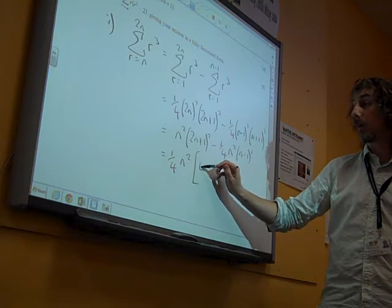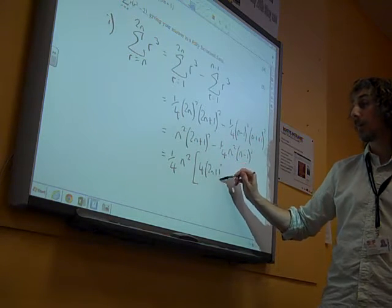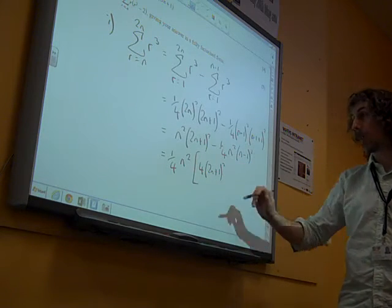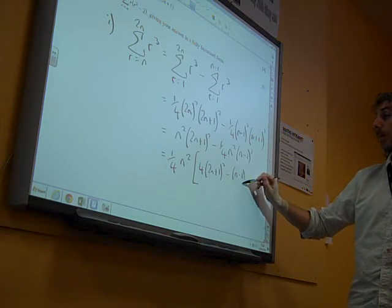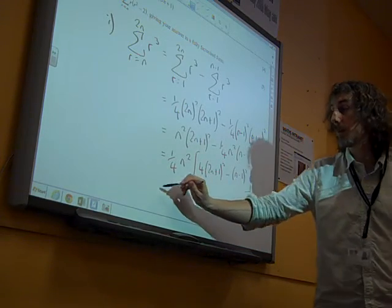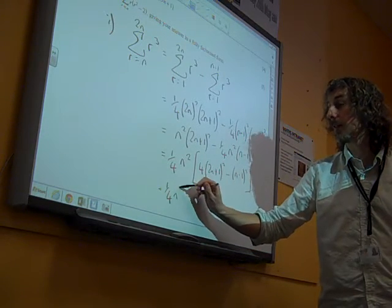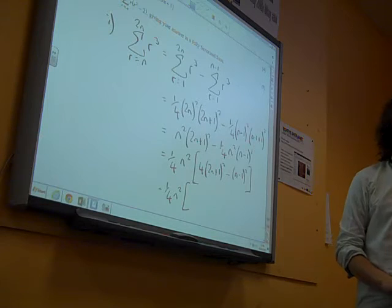We've got a common factor of N squared and a quarter that we're going to take out, which gives us 4 lots of 2N plus 1 squared in that first term. And here we've got N minus 1 squared. There's nothing for it but to multiply everything out and collect everything together.